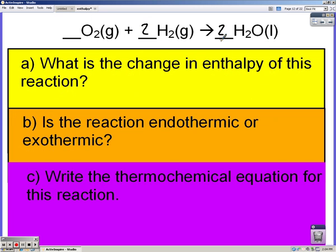To balance it we're going to need a 1, a 2, and a 2. Pause the iPod and calculate the change in enthalpy. You're going to need to use your delta H of formations for this.